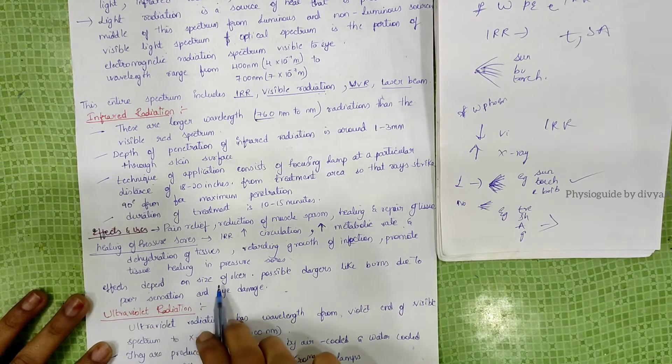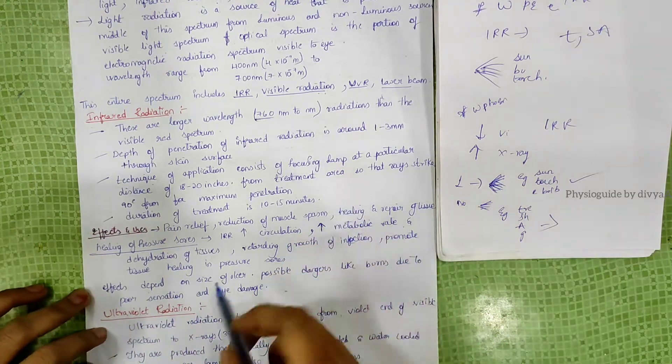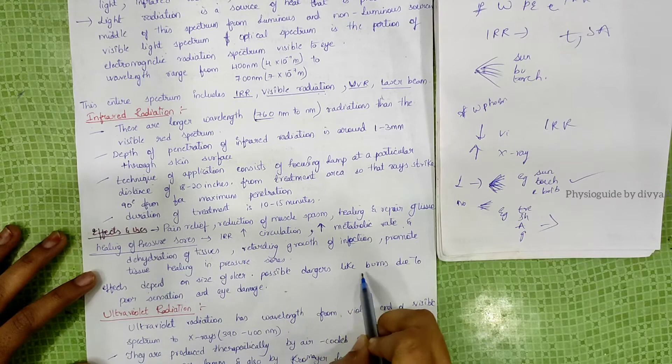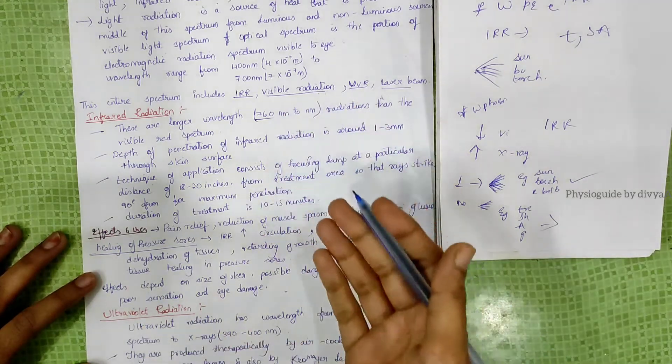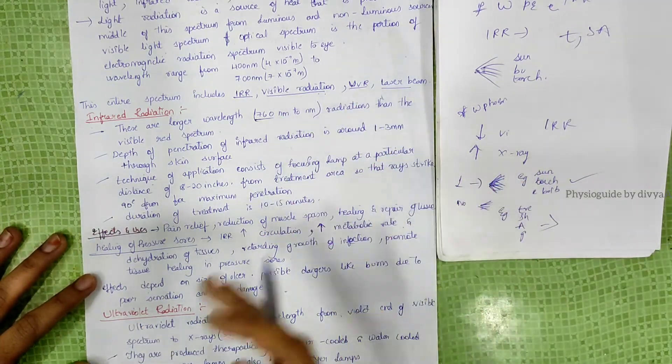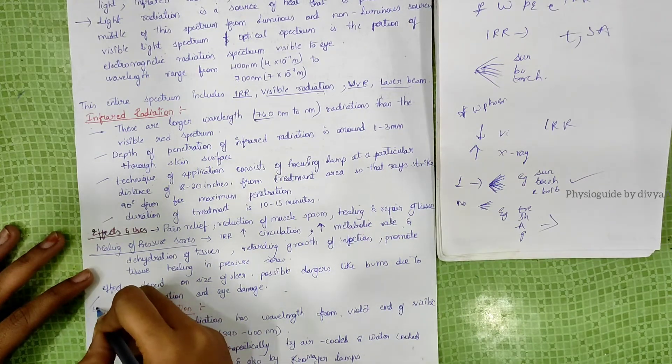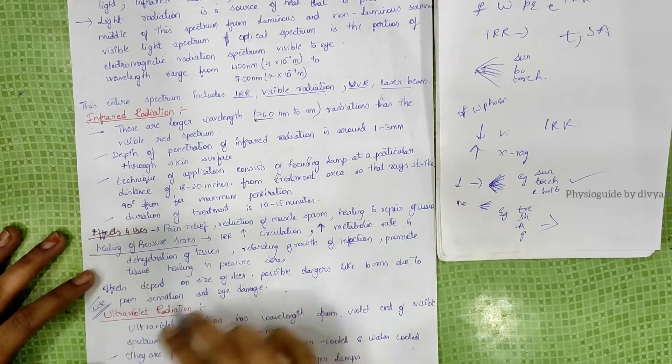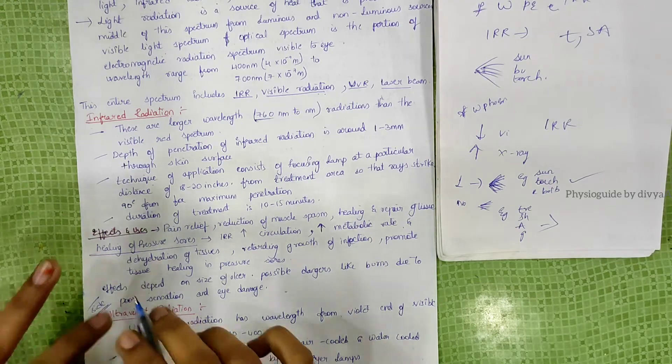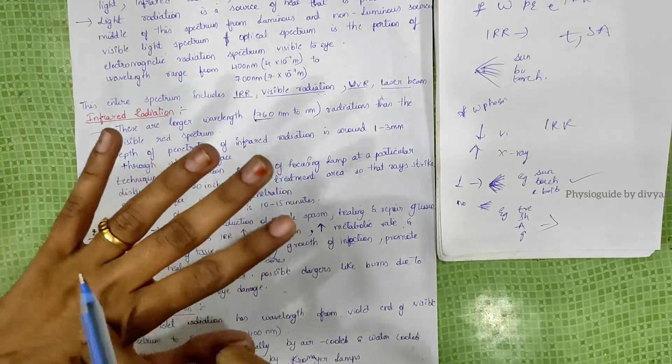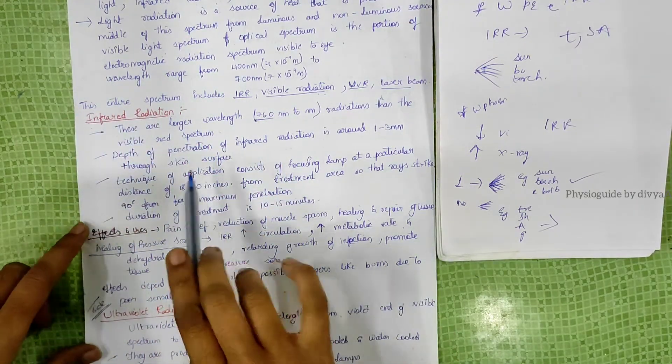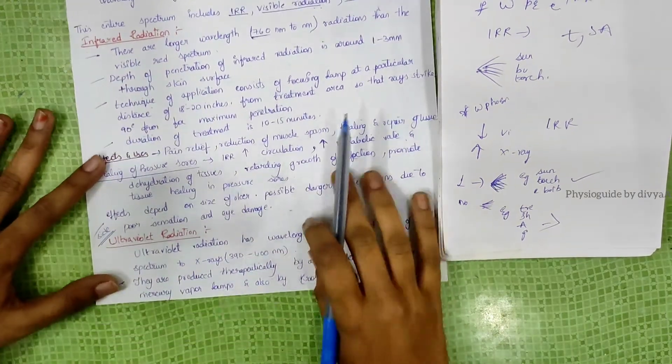Effects depend on size of the ulcer. Possible dangers include burns due to poor sensation of the skin, and eye damage. These are the side effects. If skin sensation is poor, we must avoid this. Eyes must be closed while applying infrared radiation.